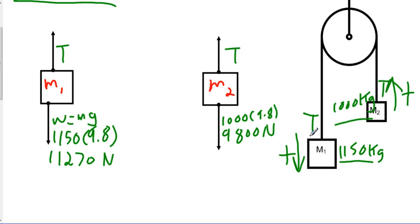You set the direction of acceleration as your positive direction. So even though we have two objects moving in opposite directions — M1 going down and M2 going up — because they are connected, we set down as positive for M1 and up as positive for M2. For this math to work out properly, we need to be consistent in the direction of acceleration.